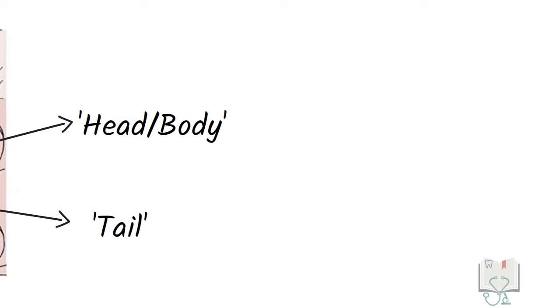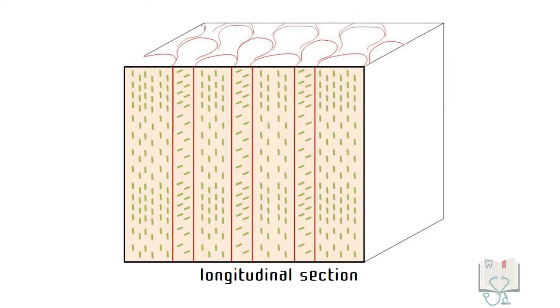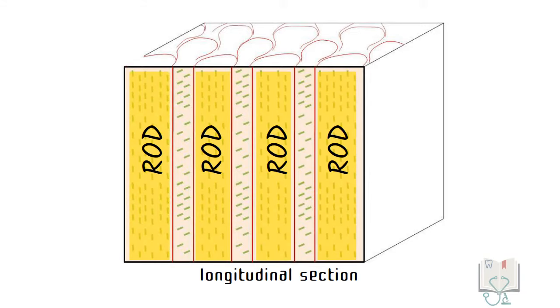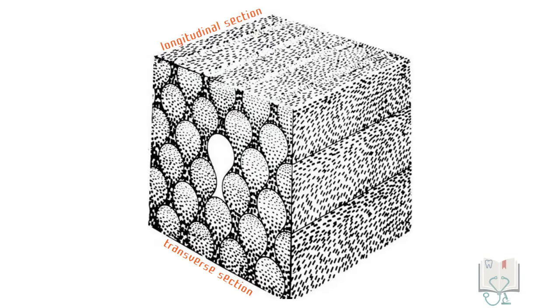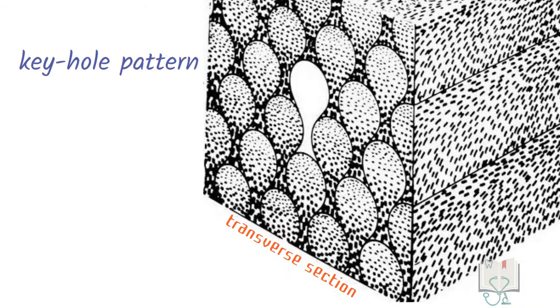However, in longitudinal section, we see the long axis of the rods in a pattern referred to as rods and inter-rods. Therefore, to put it simply, in transverse section, the rods give the keyhole pattern with head part and tail part.